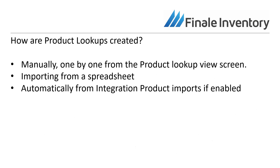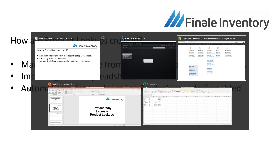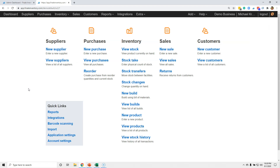There are basically three different ways to create product lookups. You can do it manually one by one from the product lookup view screen — we're going to cover that. You can import from a spreadsheet — we're going to cover that too. You also need to know that if you use one of our integration product imports, you can enable automatic lookup creation there, but we're not going to cover that in this video.